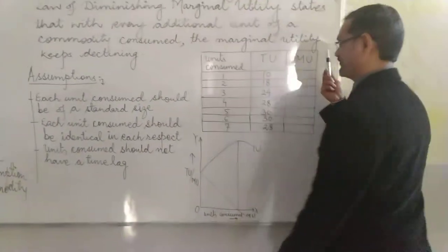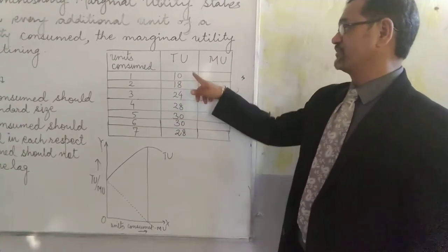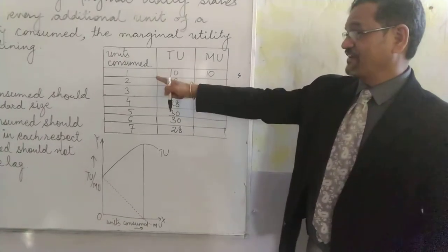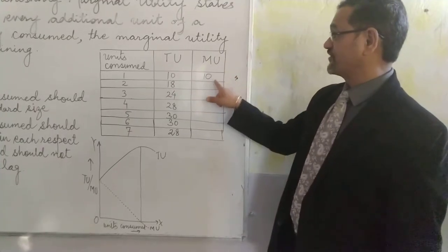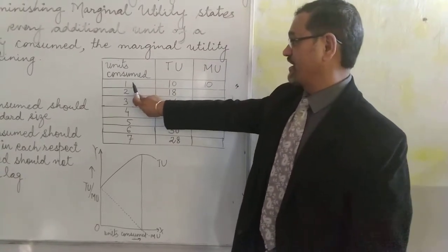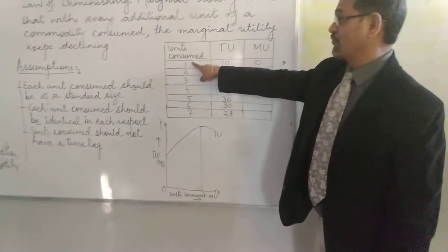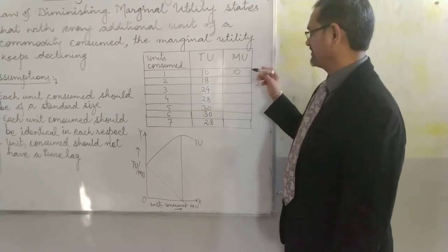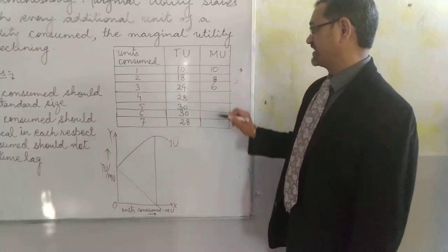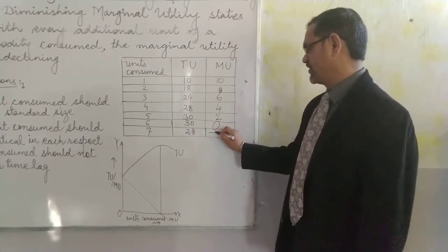Let me apply this in the form of a schedule with a hypothetical example. If I consume one unit, total utility is 10, so marginal utility is also 10. With the second unit, total utility goes to 18 — marginal utility is 18 minus 10 equals 8. Third unit: total utility 24, marginal utility 24 minus 18 equals 6. Fourth: 28 minus 24 equals 4. Fifth: 30 minus 28 equals 2. Sixth: 30 minus 30 equals 0. Seventh: 28 minus 30 equals minus 2.